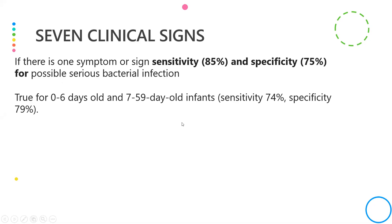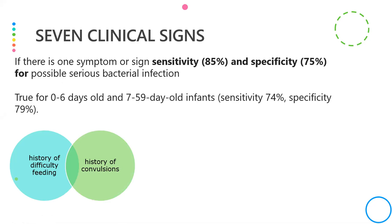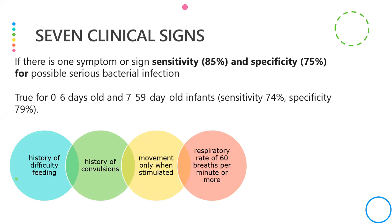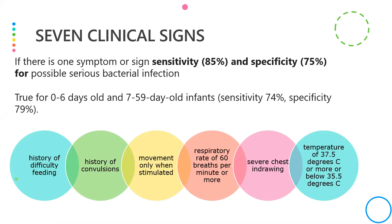The seven clinical signs are: history of difficulty feeding, history of convulsion, movement only when stimulated, tachypnea with respiratory rate above 60 per minute, severe chest indrawing, and hypo- or hyperthermia. In a community setting, any one of these signs means the baby should be referred to a higher center, as the baby has a high risk for possible serious bacterial infection.